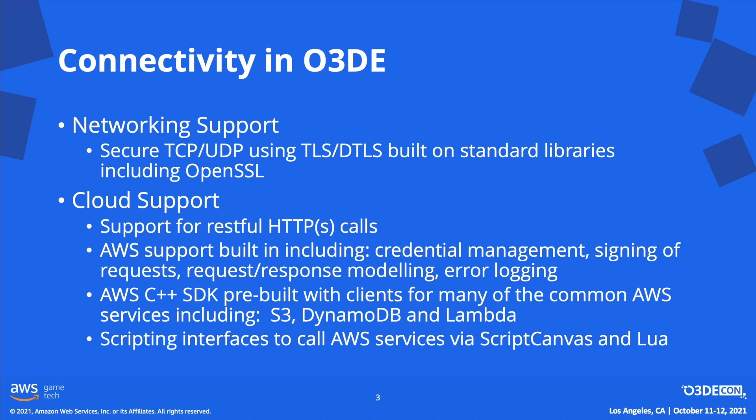The Open3D Engine provides cloud support today in the form of frameworks for REST/HTTPS calls, built-in AWS utilities to aid secrets management, request signing to support identification and authorization, request and response modeling, error logging, asynchronous calling support, and more. Open3D Engine also provides pre-built binaries for the AWS C++ SDK, including many common AWS service clients, examples of which include S3, DynamoDB, and Lambda. The Engine also provides frameworks and patterns to aid calling AWS services via scripting, be it Script Canvas or Lua.